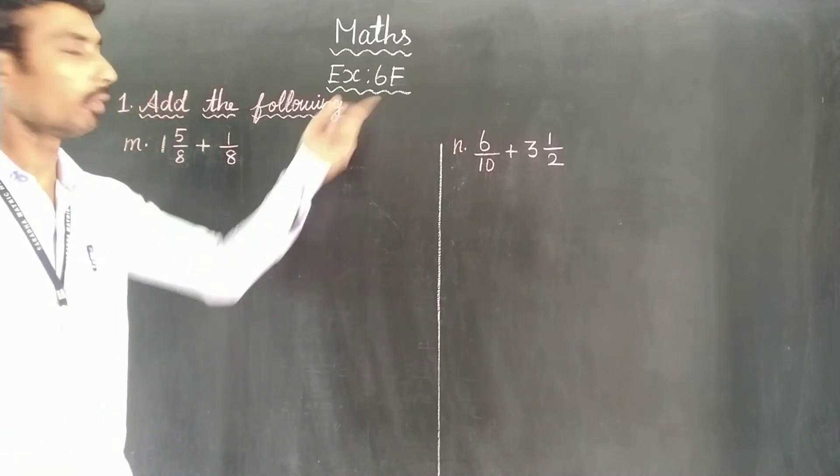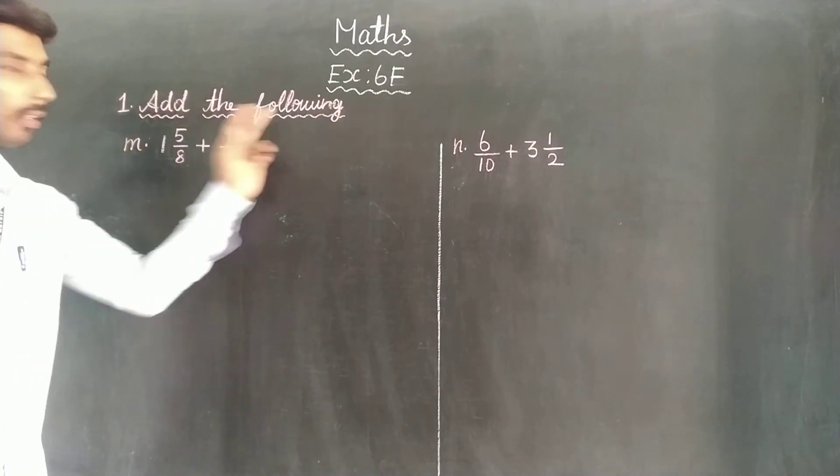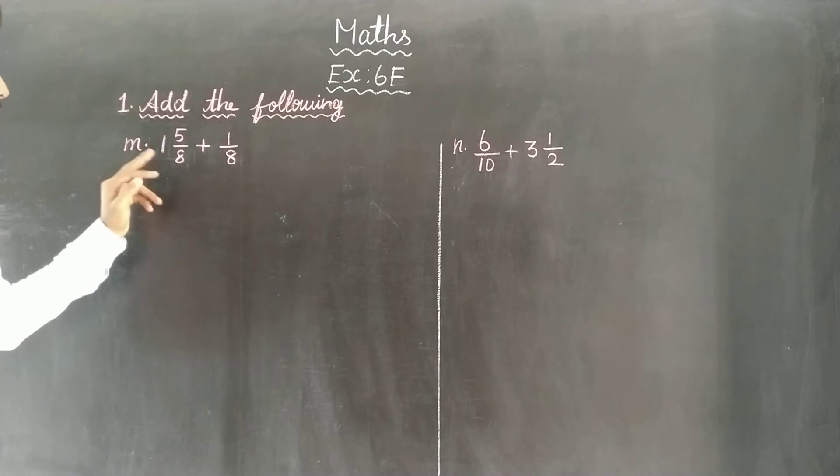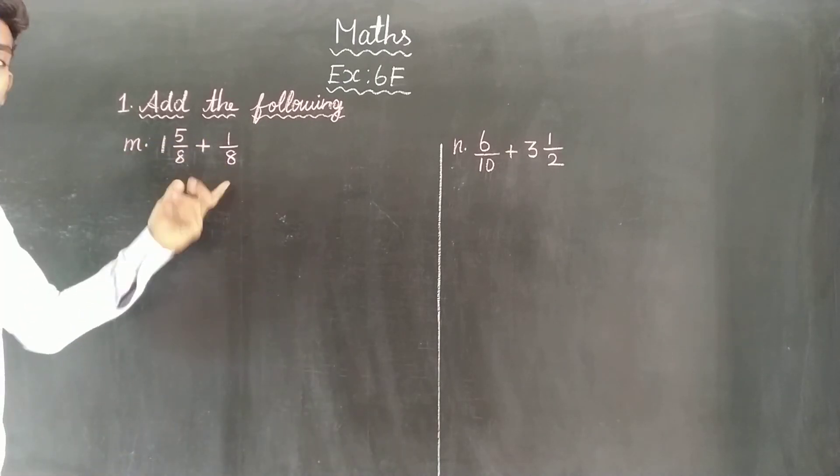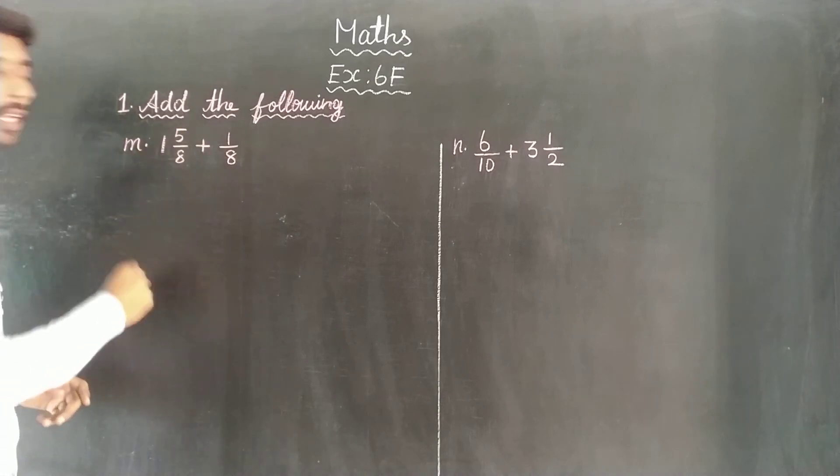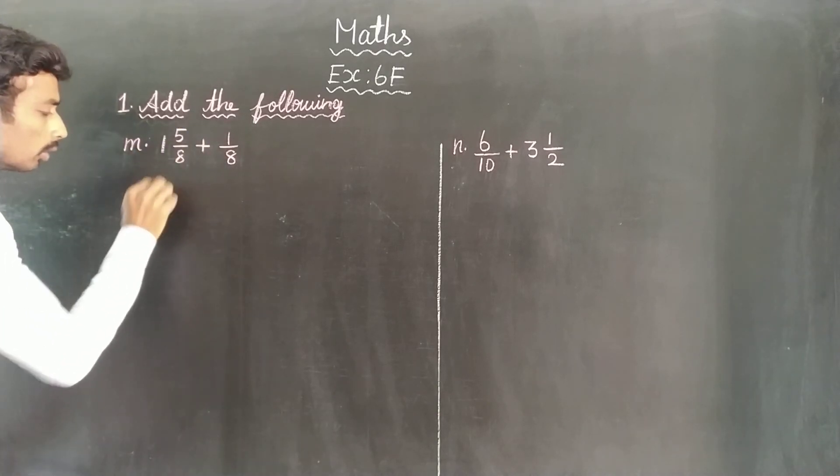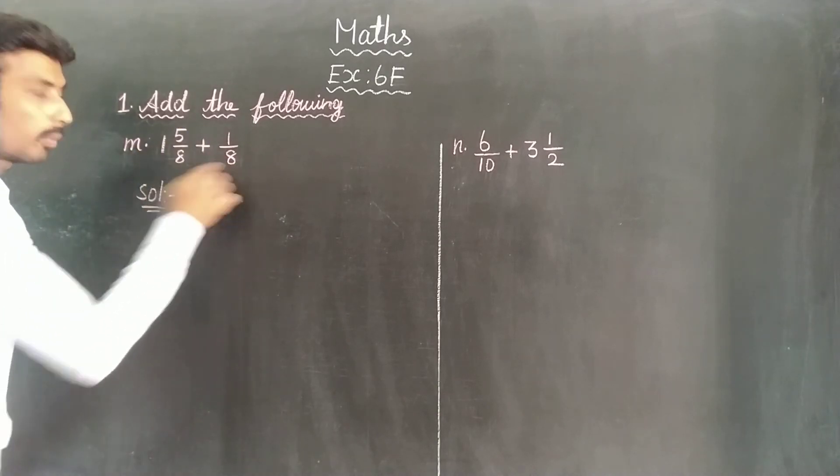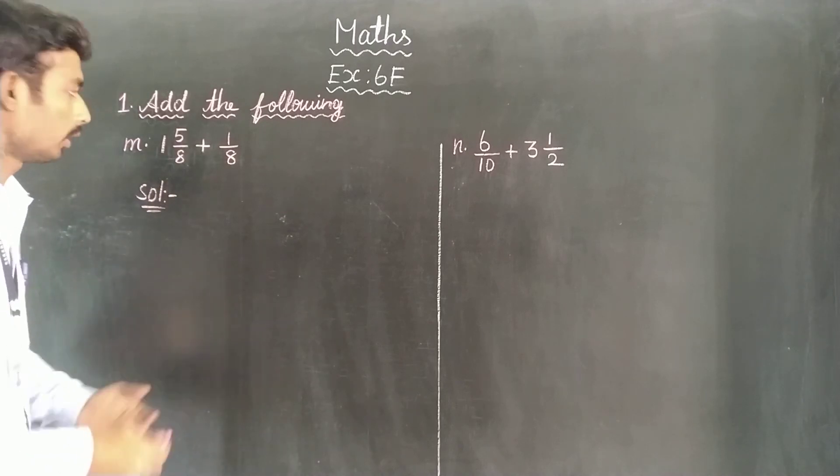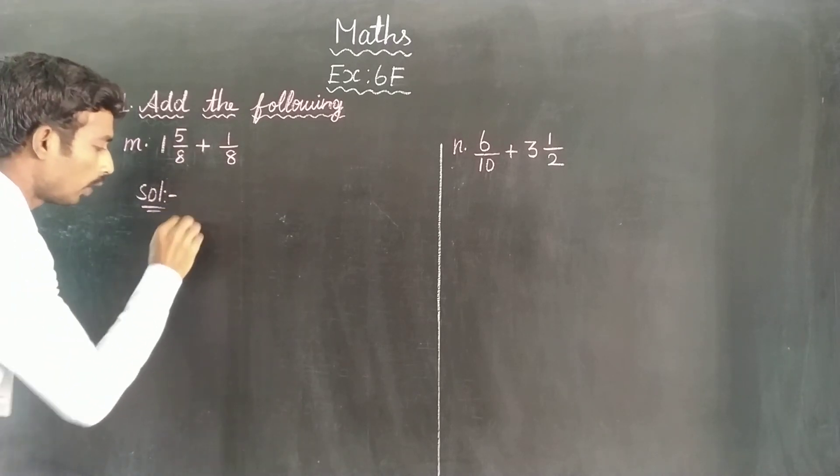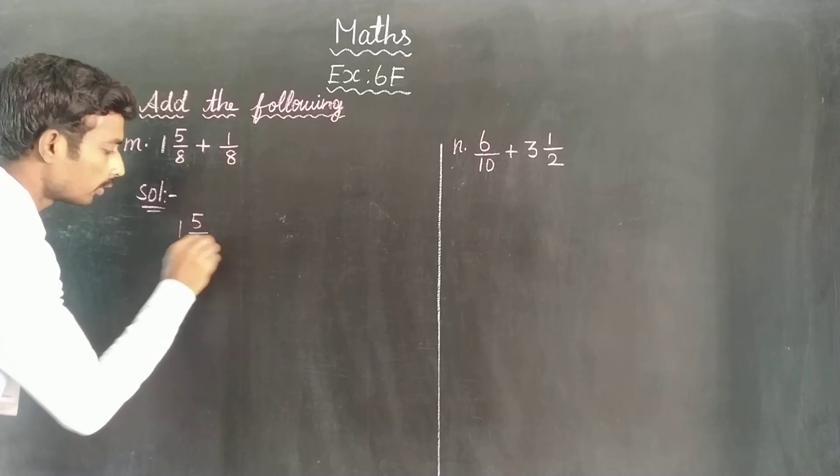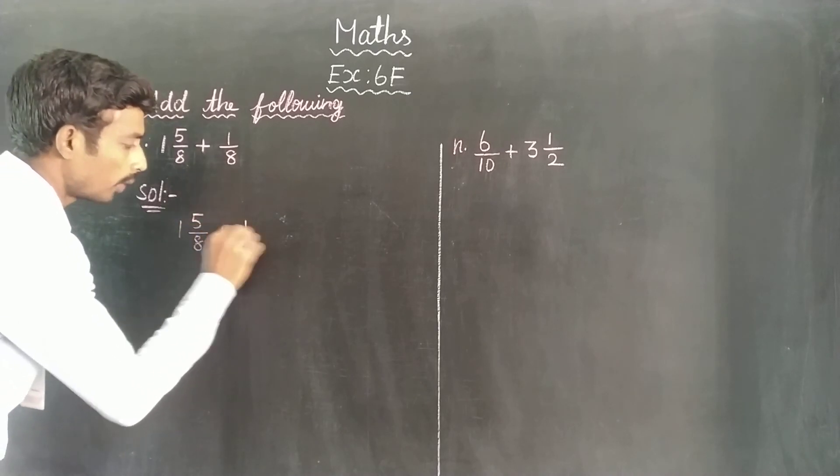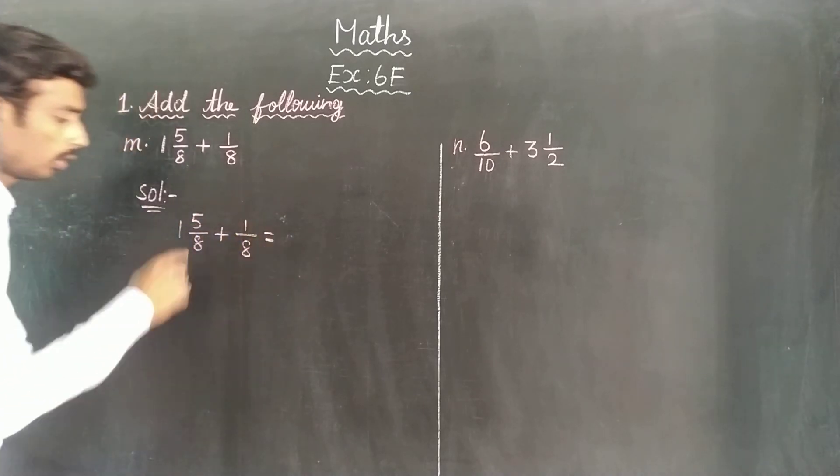This is the exercise 6F. The following problem: 1 and 5/8 plus 1/8. We will add these. The mixed fraction will be a normal fraction because the denominator is the same. Let's solve. If we compare it to the question, 1 and 5/8